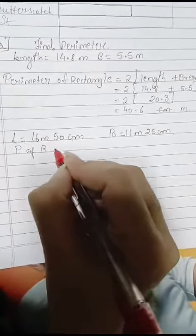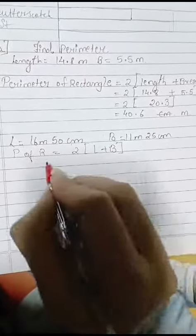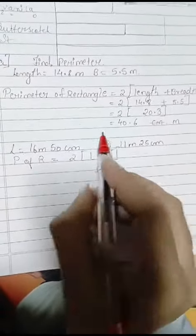Perimeter of rectangle is equal to 2 into length plus breadth. I am writing in short form, you please write in full form only.